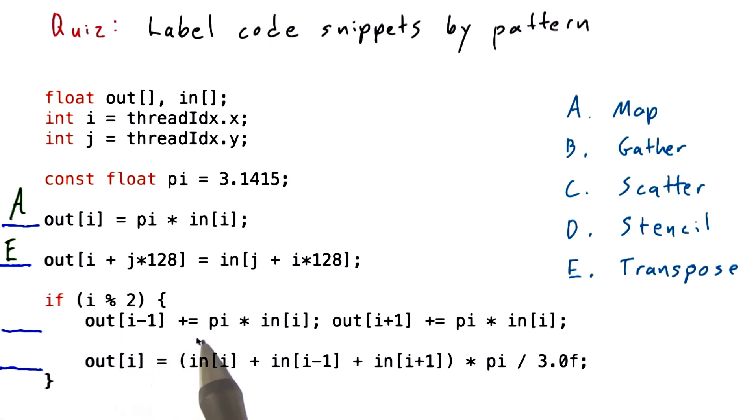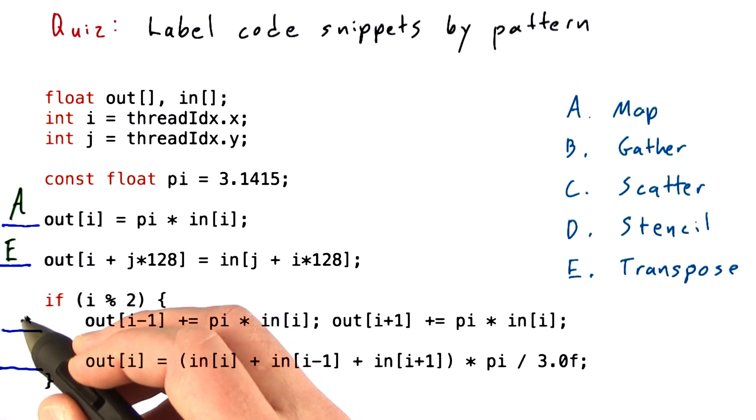Now if you look at the first one, the thread is taking the input at a given location and multiplying it by pi and placing that into a couple of different places in the output array. In fact, it's incrementing a couple of different places in the output array. So this would be a scatter operation. The thread is computing for itself where it needs to write its result.